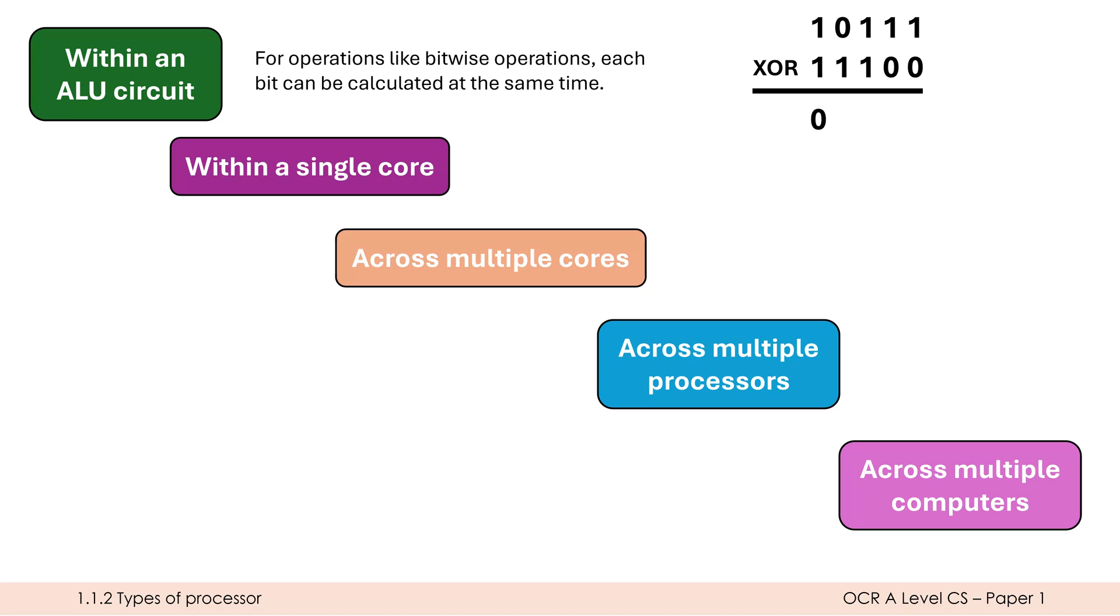I could choose to do this one by one, which is called in serial. So I could go 1 XOR 1 is 0, 0 XOR 1 is 1, 1 XOR 1 is 0, and so on. That is done in serial, and I could design a circuit which does that in serial.